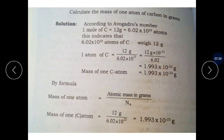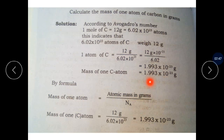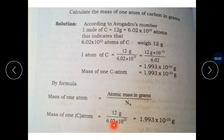The answer should be written properly. By the formula method, the mass of one atom equals atomic mass in grams divided by Avogadro's number. Both the formula method and the unitary method give the same result — you can follow whichever is easiest. Atomic mass 12 divided by 6.02 × 10²³ gives the answer 1.993 × 10⁻²³ grams.